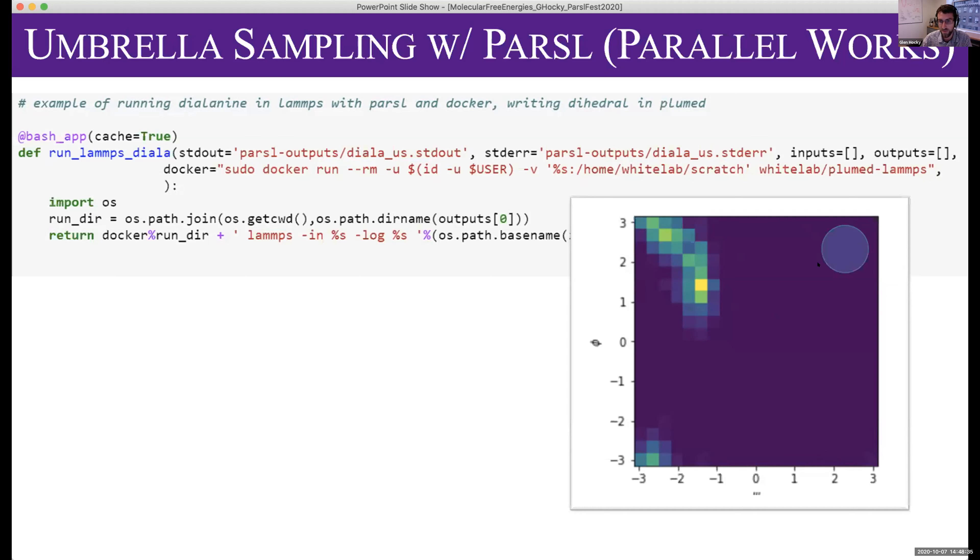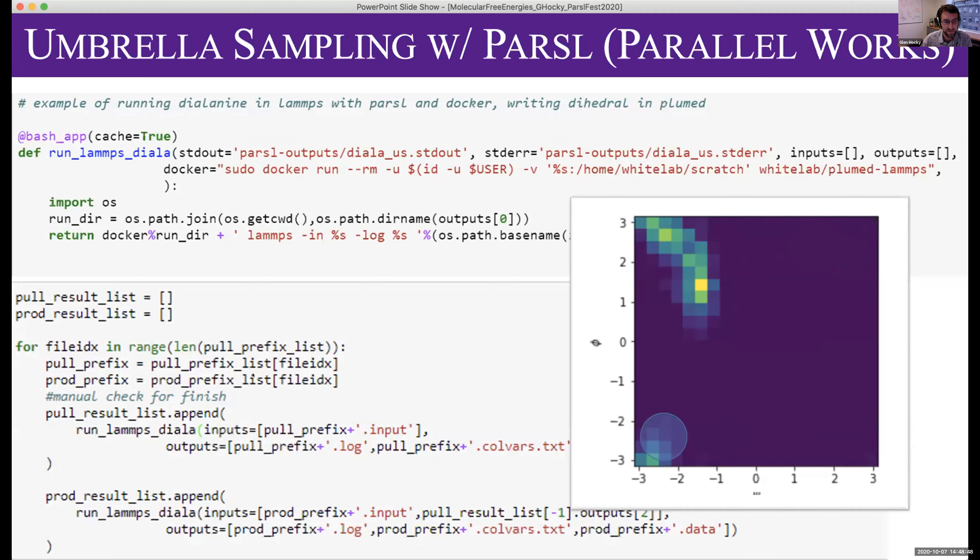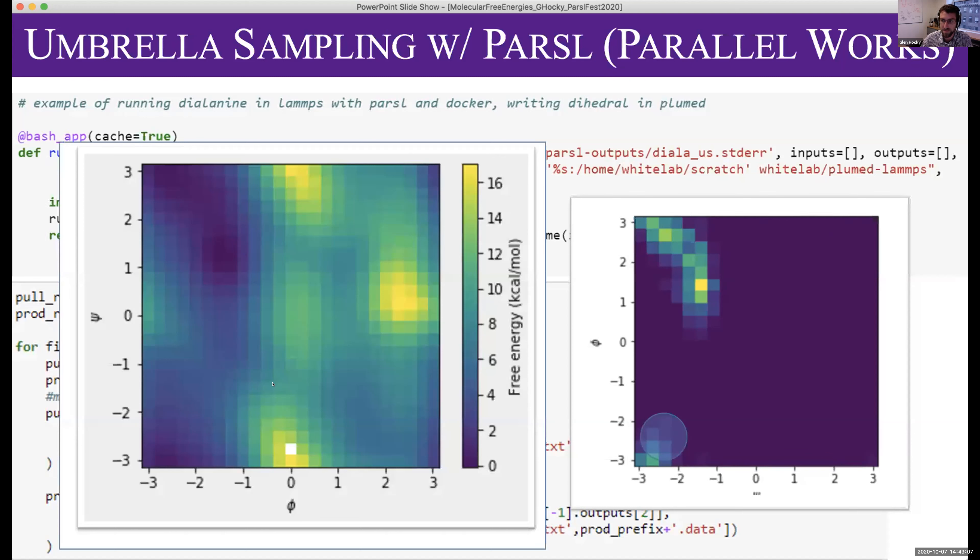In umbrella sampling, we force the molecule to be where this circle is, then sample there, then move this circle around and sample at different locations. We do that in PARCEL with a simple loop where we pull the molecule to a particular location. We have a PARCEL app that pulls it into that circle and another that runs the simulation while it's there. Those can all run independently. Then we analyze it and get a prettier energy map. This would be about 2,000 semi-independent simulations.